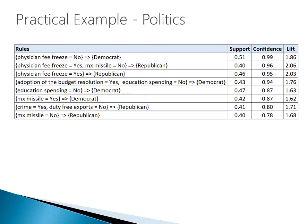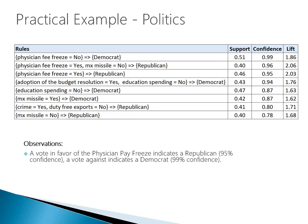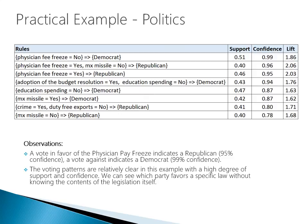After running the algorithm with certain threshold parameters, here are some of the rules generated. One observation is that a vote in favor of the physician pay freeze indicates a Republican with 95% confidence. A vote against indicates a Democrat with 99% confidence. The voting patterns are relatively clear with a high degree of support and confidence. We can see which party favors a specific law without knowing the contents of the legislation itself — and this shows all sorts of wonderful insights we can gain not just in business context, but in a political sense as well.